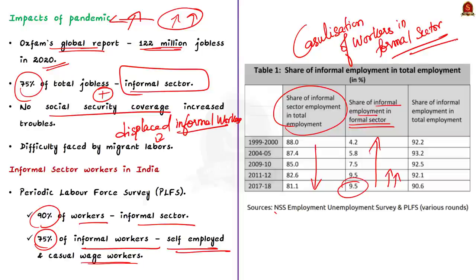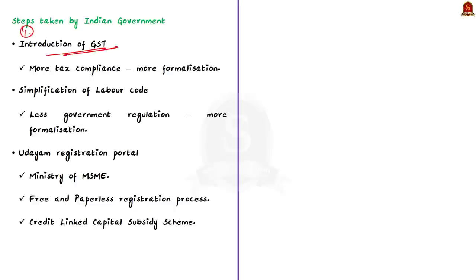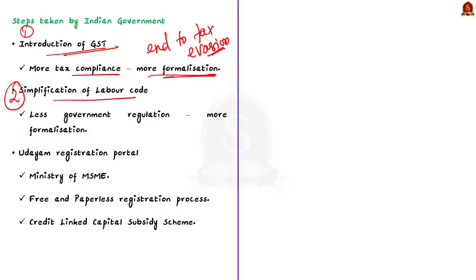Having seen the status of informal sector employment in India, we will see some steps taken by the government. Firstly, the introduction of GST. The mechanism of GST has helped in checking fraud related to payment of tax, has put an end to tax evasion, and has introduced more tax compliance, thus resulting in the formalization of the economy. Secondly, the simplification of labor codes. One of the major hindrances to formalization is the increased government regulation of the formal sector. The informal sector stays informal because they worry that if they enter the formal sector, they might face excessive government regulation. So to address this, the government has simplified various labor codes, which will help formalization of the unorganized sector.